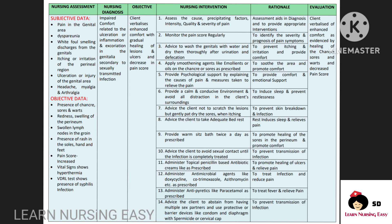Interventions will be assessing the cause, precipitating factors, intensity, quality, and severity of pain so that we can provide appropriate intervention. Monitor the pain score regularly so that according to the severity of pain we can provide treatment. Advise the client to wash the genitals with water and dry them so that itching and irritation can be prevented. Smoothening agents like emollients or oils can be given in order to soothe the area, and psychological support should be provided to enhance comfort.